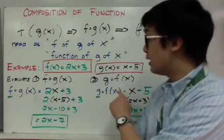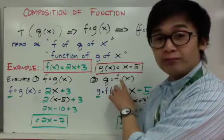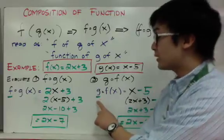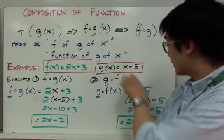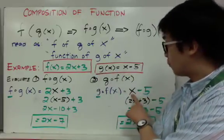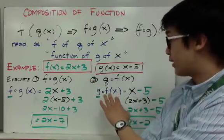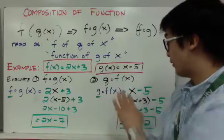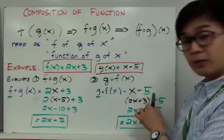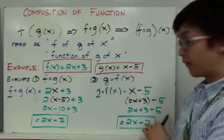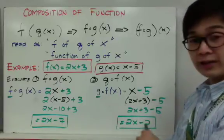For the second example, I have g of f of x. The technique is the same — look at the first letter. Since it's g, I copy g of x, which is x minus 5, and replace x by f of x, which is 2x plus 3. So I have (2x plus 3) minus 5. Getting rid of the parentheses gives 2x plus 3 minus 5, and combining like terms, g of f of x equals 2x minus 2.